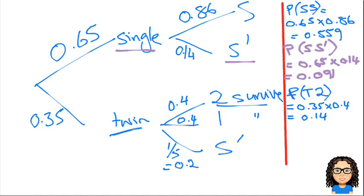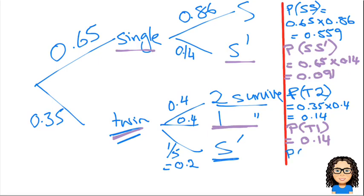The next combination is twin where 1 survives — that's the same value because they're equal, so 0.14. And lastly we've got twin where neither survives: 0.35 × 0.2 = 0.07. So there's the set up of our tree diagram.